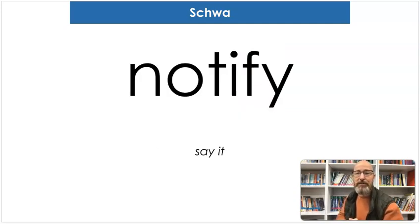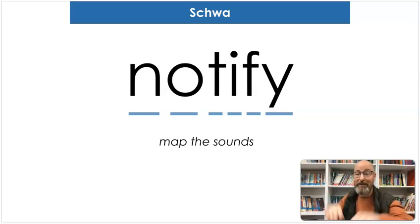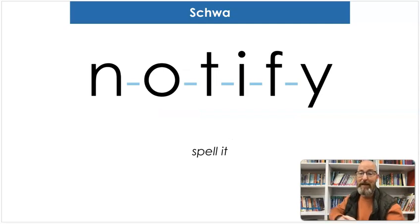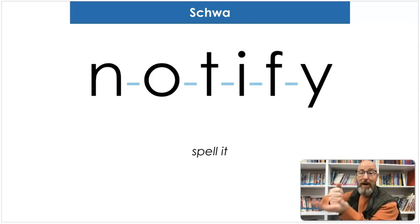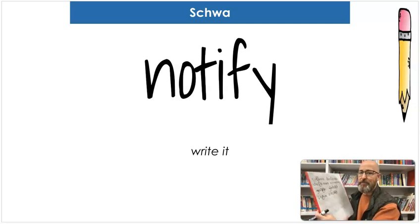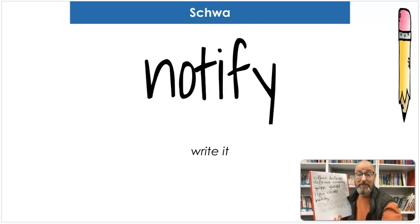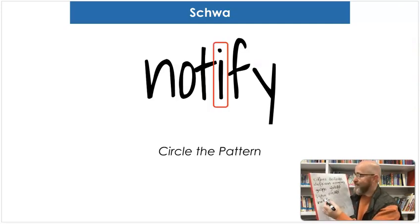The next word is 'notify.' Say notify. Map the sounds: N-O-T-I-F-I. Notify. Spell it: N-O-T-I-F-I. Notify. If someone notifies you of something, they're telling you about it — they're letting you know. Let's write it: N-O-T-I-F-I. Where's the schwa? In the I — that's right. Notify.